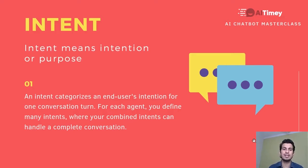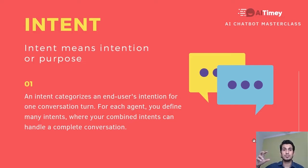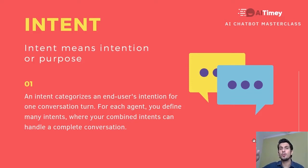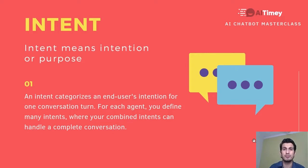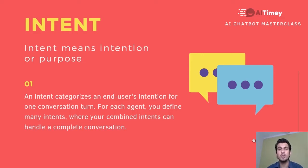An intent categorizes an end user's intention for one conversation turn. When a user is sending you one message in your chat assistant, what will be the answer? What is the user's intention? What are they trying to get and what can you give them? You have to judge what was their intent, what are they trying to get, and according to that, what has to be your response? It's just like a question-and-answer format — one answer can be configured in one intent.